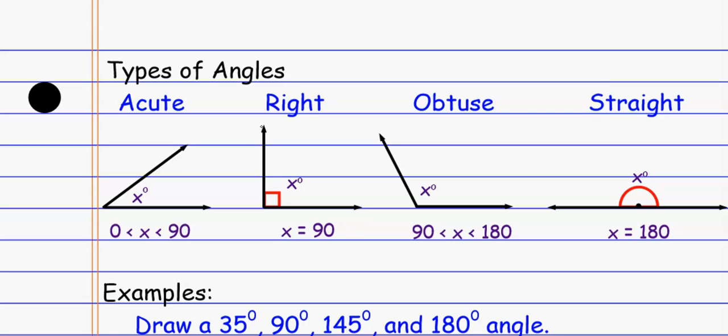We have a right angle. A right angle is one that equals exactly 90 degrees. An obtuse angle is one that's bigger than 90 degrees, so between 90 and 180. And then a straight angle is 180 degrees.